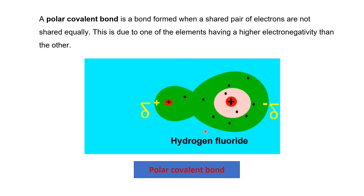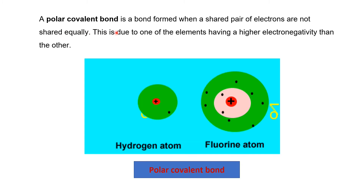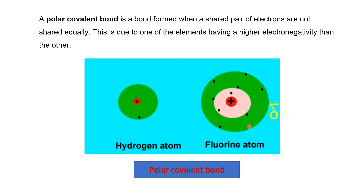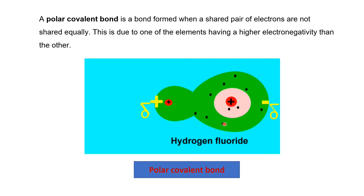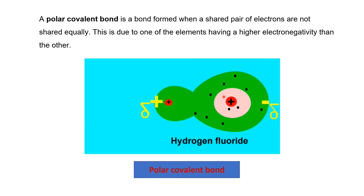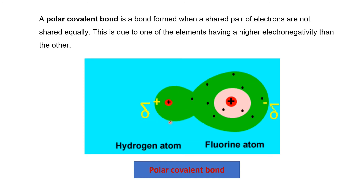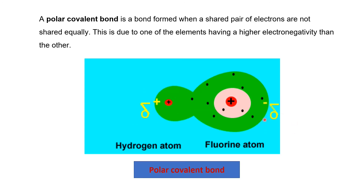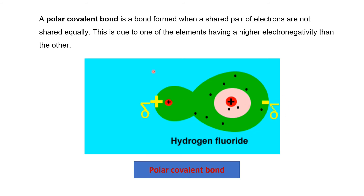When there is a large difference in electronegativity, a polar covalent bond is formed. A polar covalent bond is the bond where the shared pair of electrons are not shared equally. For example, hydrogen has one electron and fluorine has seven valence electrons. When hydrogen and fluorine come close to each other, they form a covalent bond. But fluorine being more electronegative than hydrogen attracts the shared pair of electrons towards itself. The shared pair of electrons is not equally distributed — they are towards fluorine. This leads to partial charges: hydrogen develops a delta positive (δ+) charge and fluorine develops a delta negative (δ−) charge. A higher difference in electronegativity leads to a polar covalent bond.